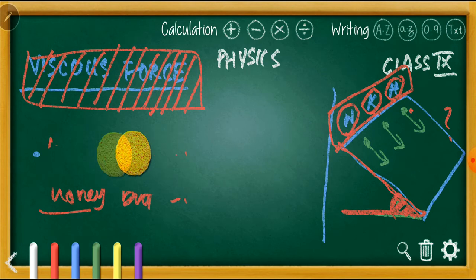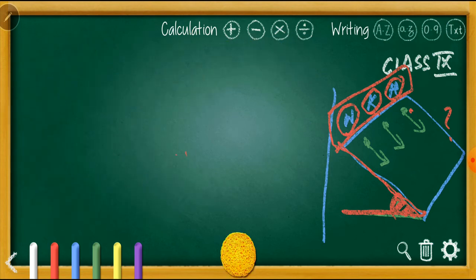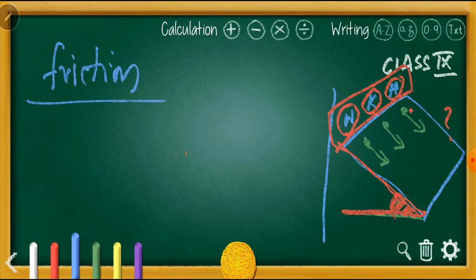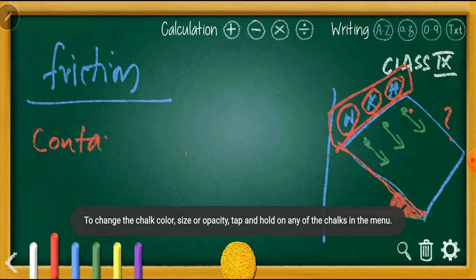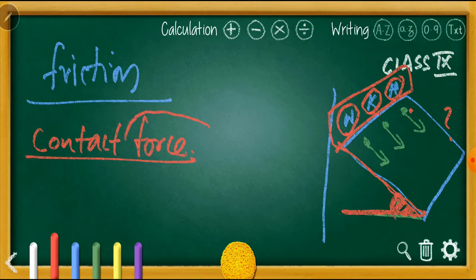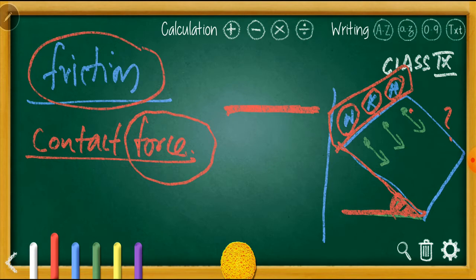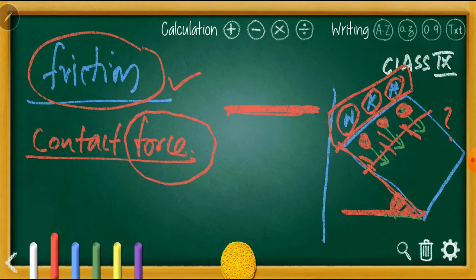Now we are going to discuss viscous force or viscosity. You know that while discussing forces in eighth standard, we discussed a force called frictional force. It is a contact force — forces which come into play when two surfaces are in contact. Here, as water, kerosene, and honey flow on the glass plate, there is frictional force between each fluid and the plate. But this frictional force is almost the same for all three, so it cannot explain the difference in speed.